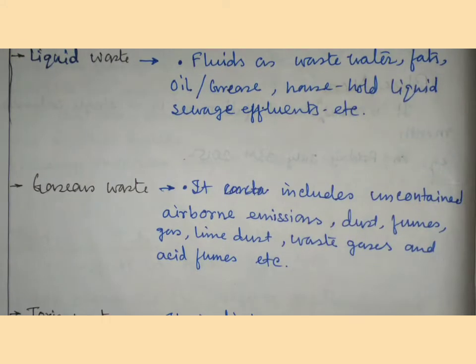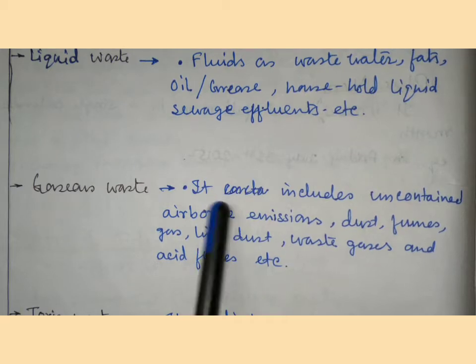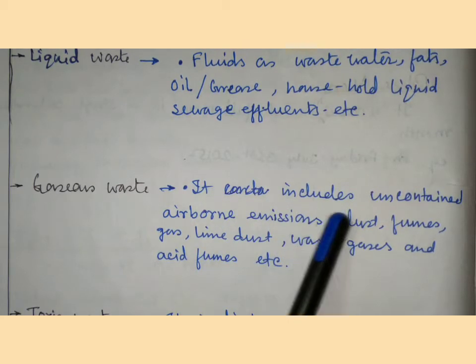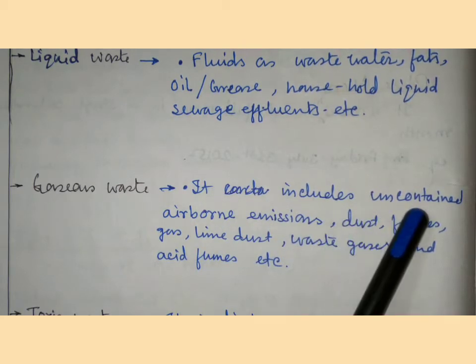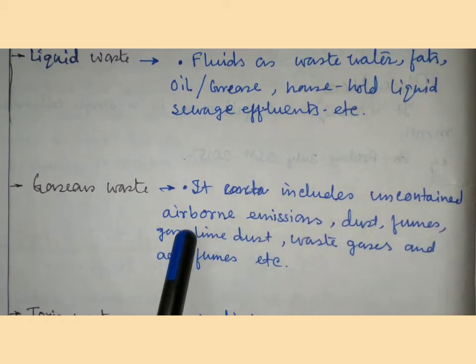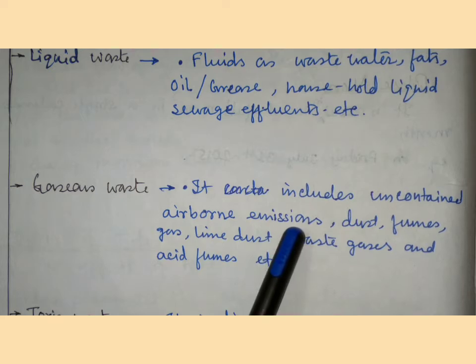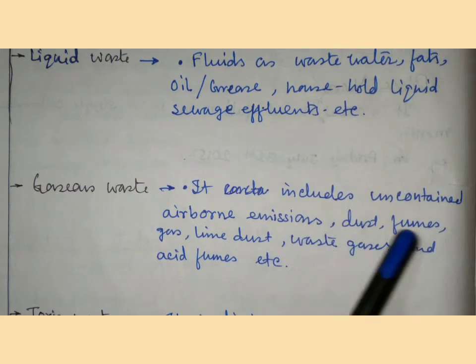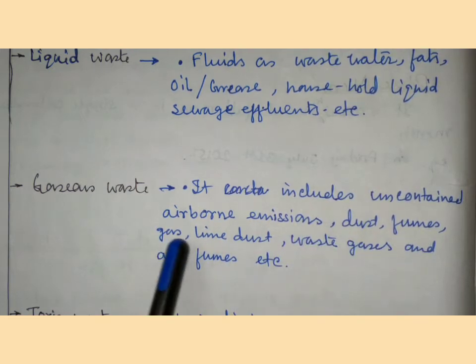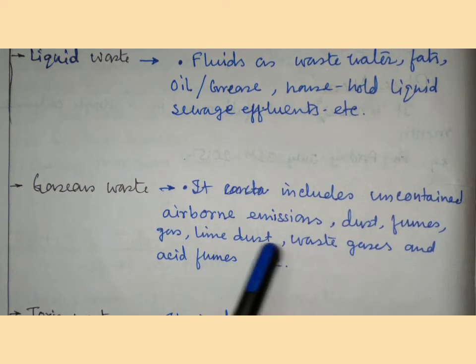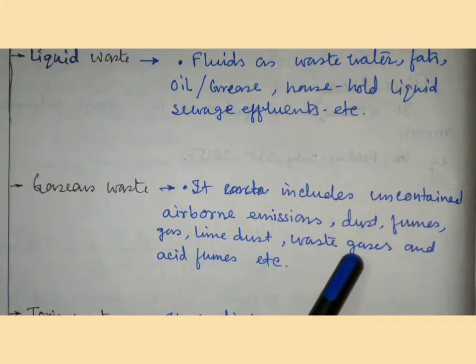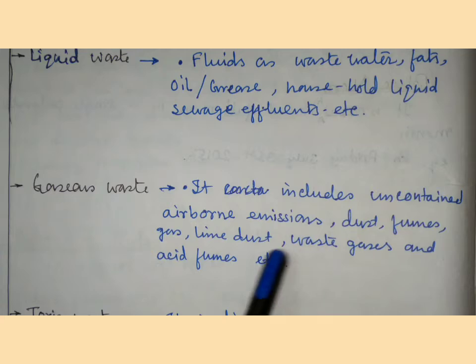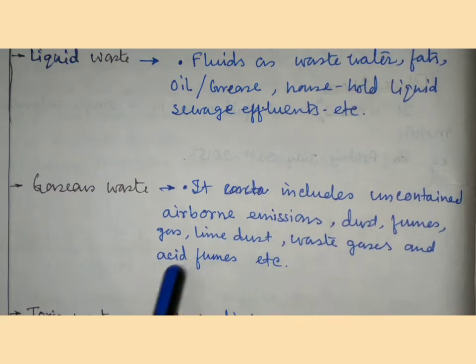Gaseous waste includes uncontained airborne emissions: dust, fumes, gas, lime dust, waste gases, and acid forms. These are all considered gaseous waste.